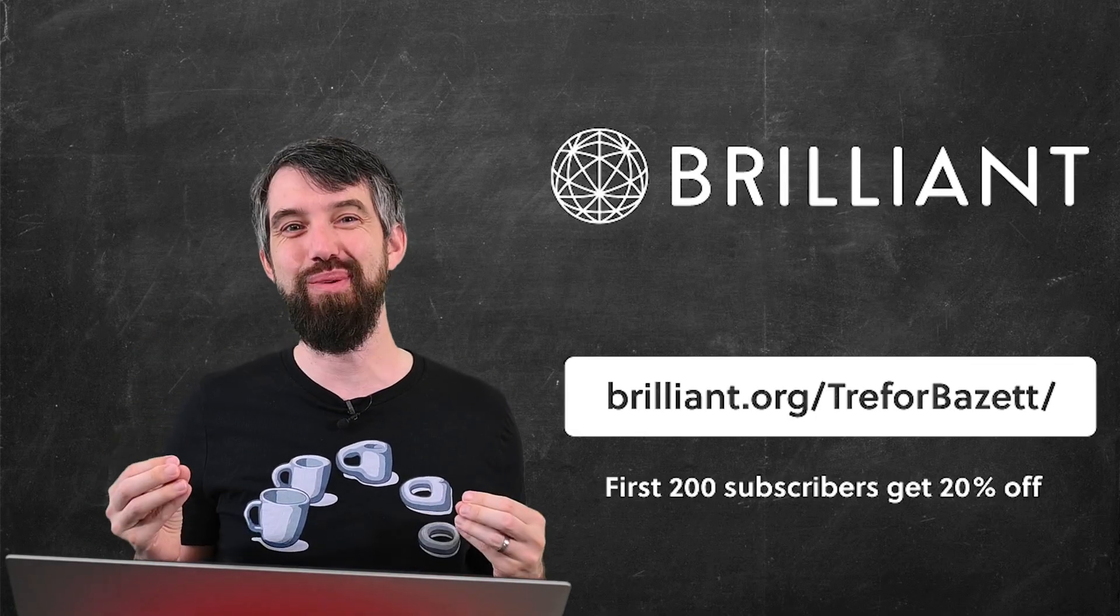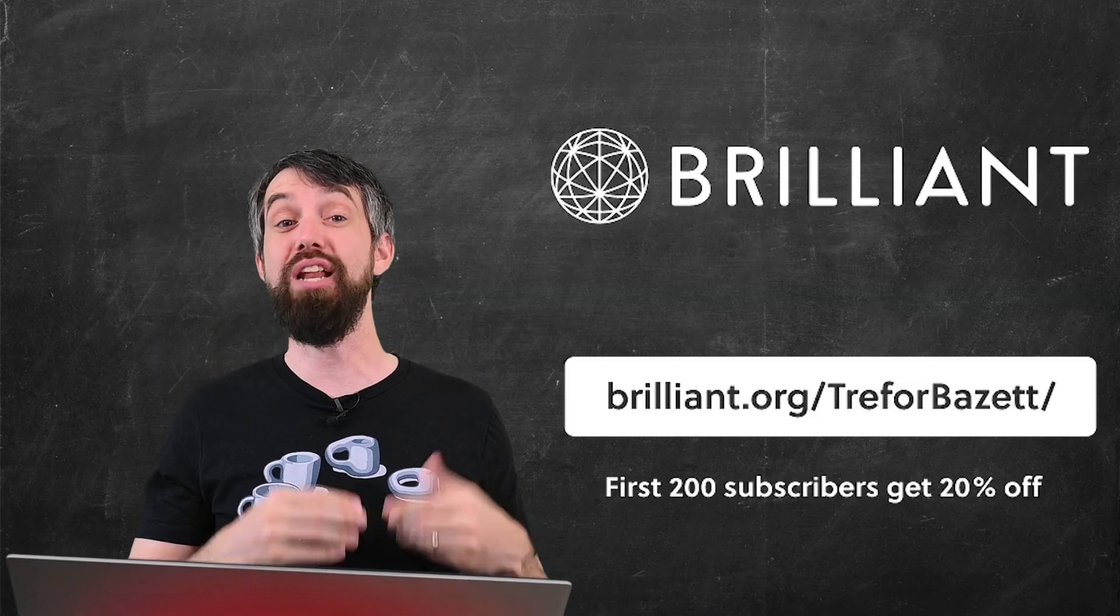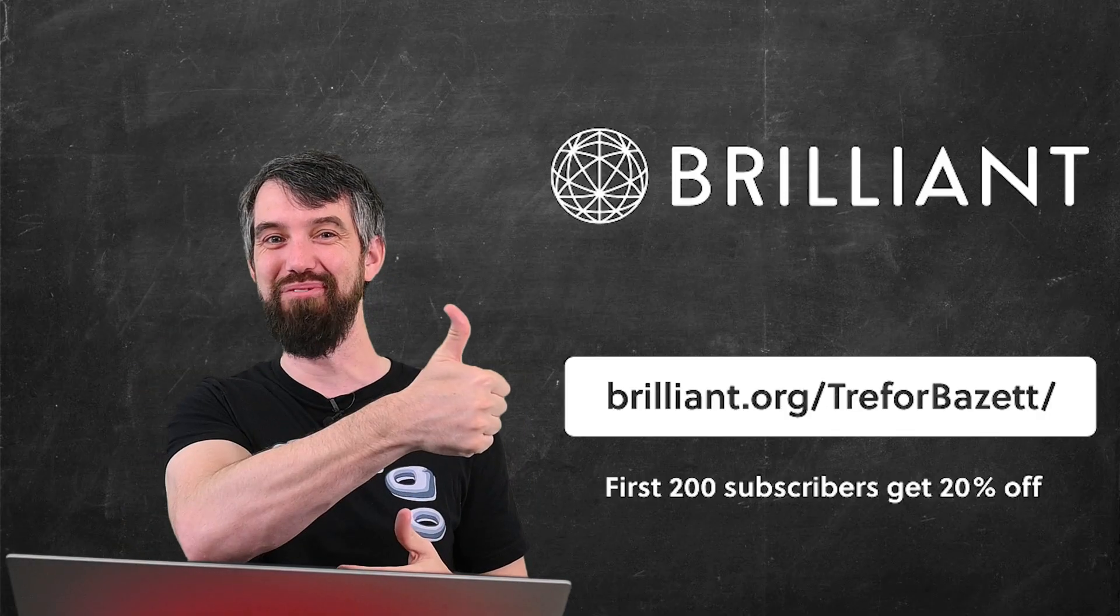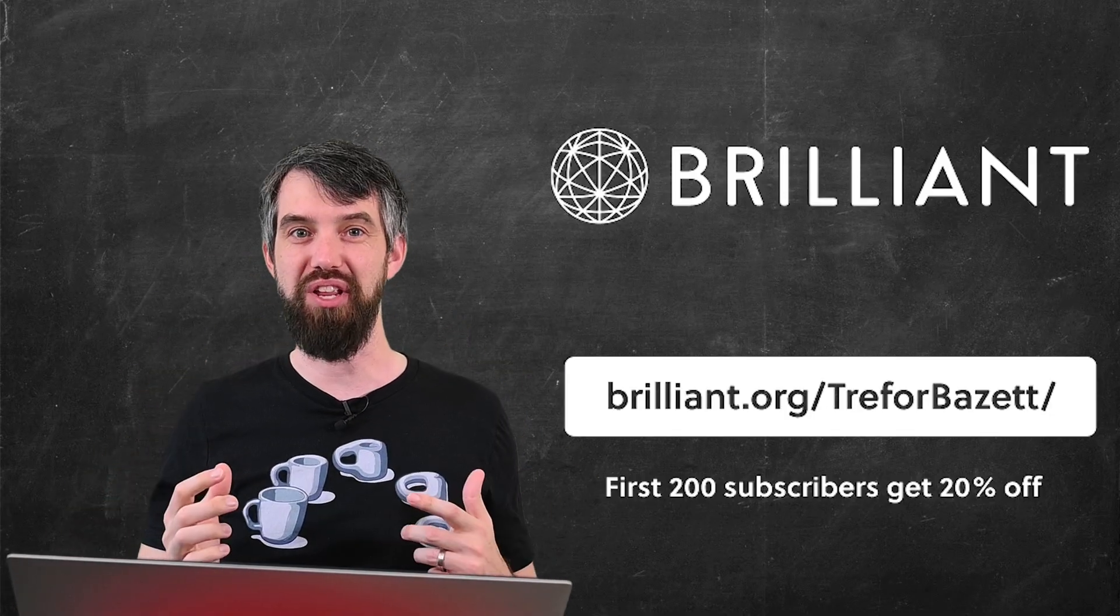So go to brilliant.org/TrevorBazit, sign up for free, or the first 200 people are going to get 20% off an annual premium subscription. So with that, if you liked this video, do give it a like for the YouTube algorithm. If you have any questions, leave them down in the comments below, and we'll do some more math in the next video.